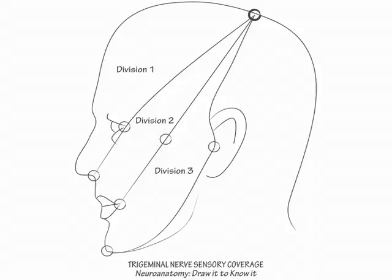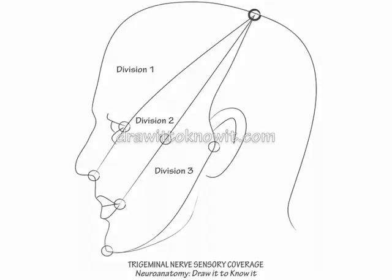Two key details of facial sensory coverage are that cranial nerves 7, 9, and 10 cover the outer ear, and that C2 or C3, depending on your reference, covers the angle of the mandible. In other words, division 3 of the trigeminal nerve covers neither the outer ear nor the angle of the mandible.